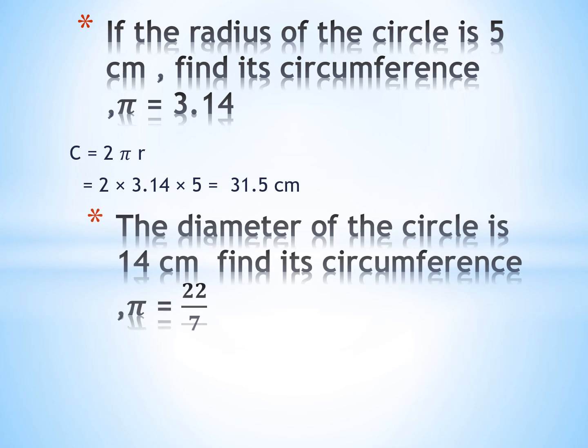Another example: a diameter of the circle is 14 cm. Find its circumference, and π equals 22 over 7. Now I have a diameter, so I use the rule with diameter. So the circumference equals d times π, equal 14 times 22 over 7, equal 44 cm.